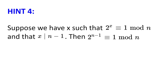Hint number 4. Suppose that we have some x such that 2 to the power of x is congruent to 1 modulo n, and that x divides n minus 1. Then 2 to the power of n minus 1 is congruent to 1 modulo n. Why is this the case?